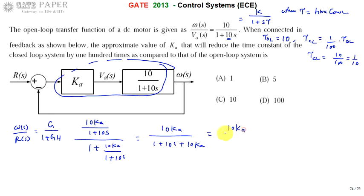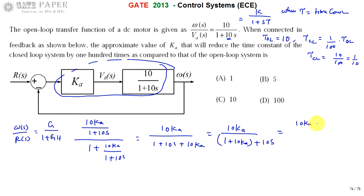This can be written as 10·Ka divided by (1 + 10·Ka + 10s). To put it in standard time constant form (1 + s·τ), take out (1 + 10·Ka) as a common factor from the denominator. The result is [10·Ka / (1 + 10·Ka)] divided by [1 + 10s/(1 + 10·Ka)], where the coefficient of s is τ_closed_loop.